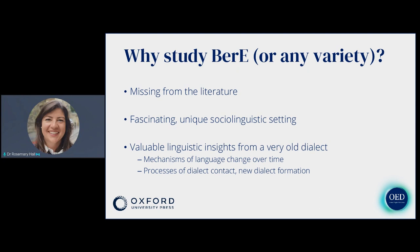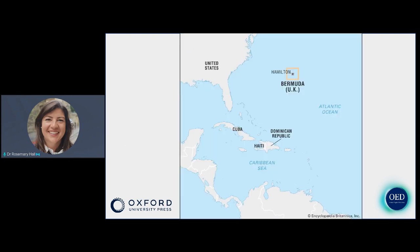A huge motivation for me as a linguist, and for many linguists working on lesser-known varieties of English, is putting that variety and that place on the map. Speaking of maps, here is one of Bermuda. For those of you who aren't from Bermuda, this will really help to pinpoint where it actually is.